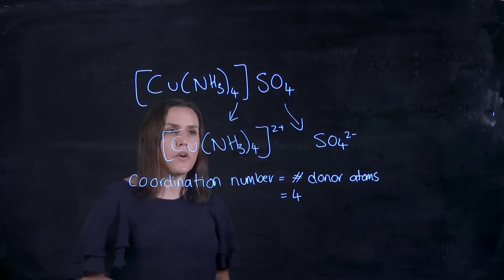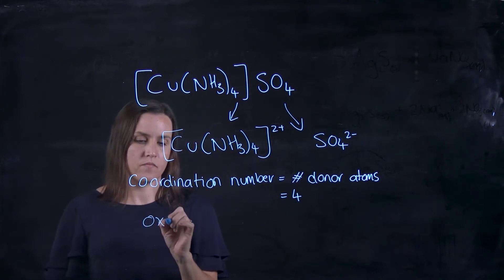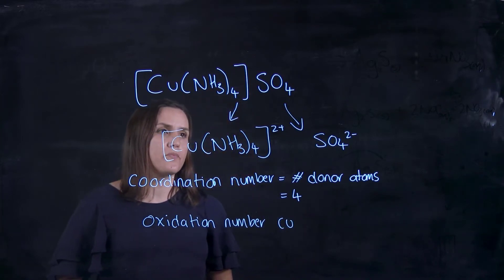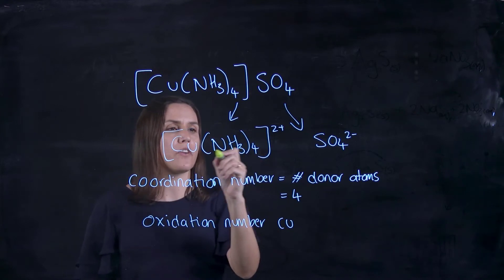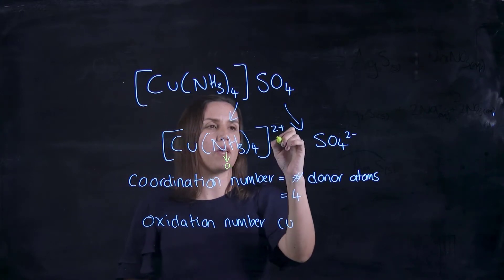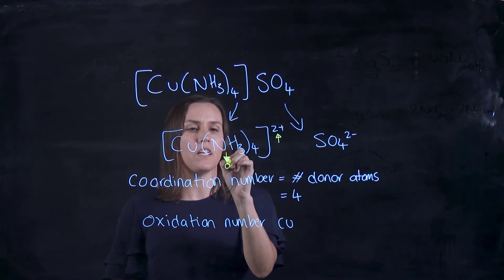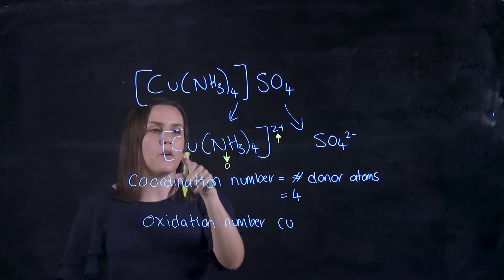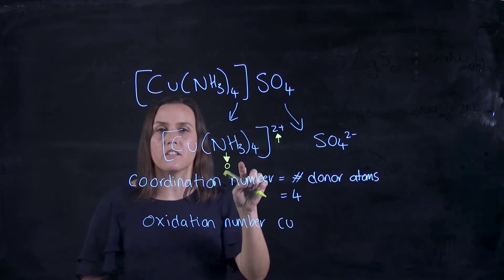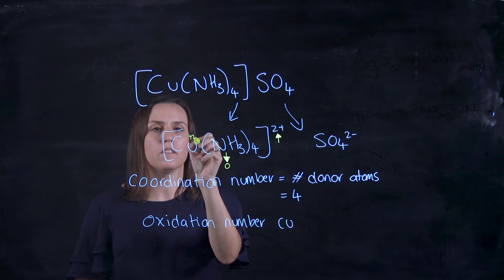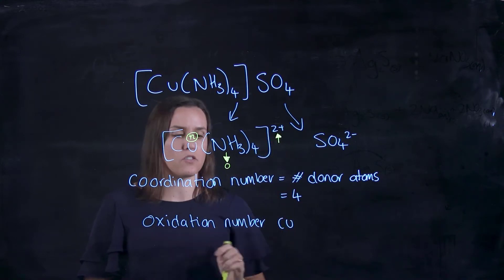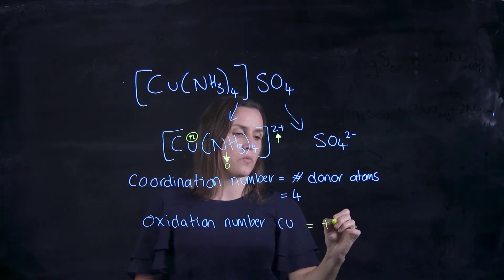Okay, so now we want to work out the oxidation number of the copper. So we know, I'll just draw on this part here to explain it. So we know the NH3 is neutral. Okay, so that's a neutral ligand. Overall, we have a 2+ charge. So we need to write down a value for copper that when it's added to 0, it will give us a 2+ overall. So because we're adding it to 0, a +2 on this copper, a +2 plus 0 would give us a +2 overall. So the copper's coordination number would be +2.